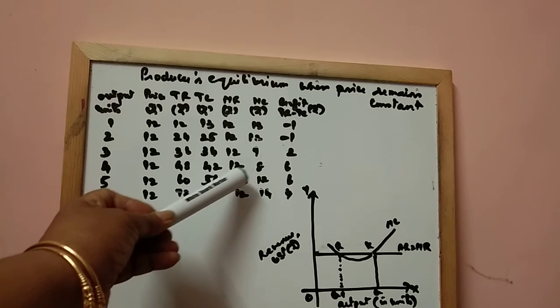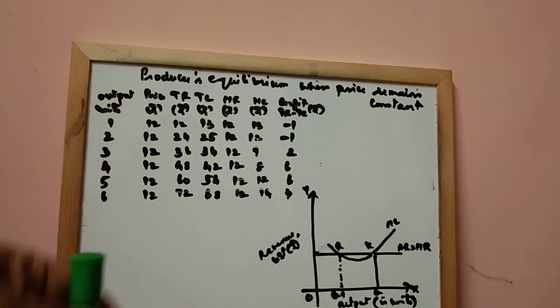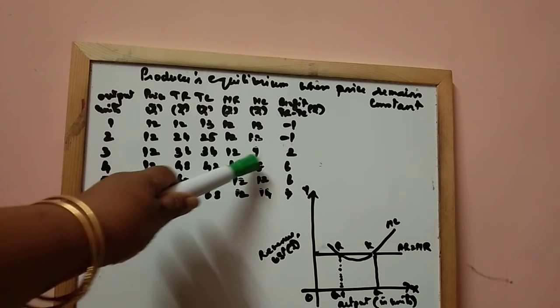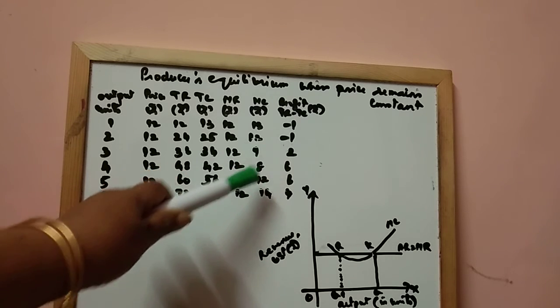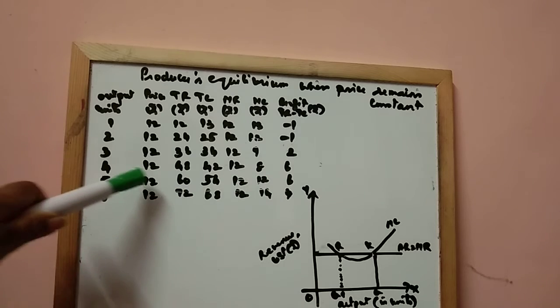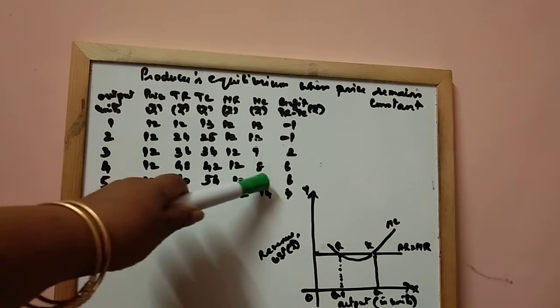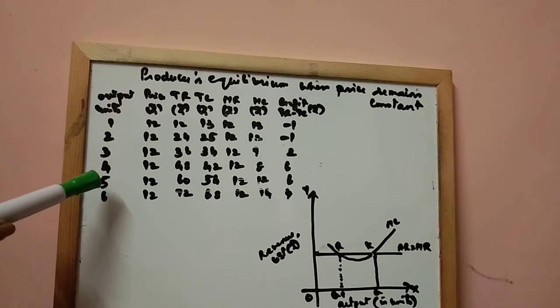The previous level of output, you find marginal cost is 8 and marginal revenue is 12. So here you find MR is greater than marginal cost. So this is the equilibrium for the producer. So at this level of unit, you find producer's equilibrium.